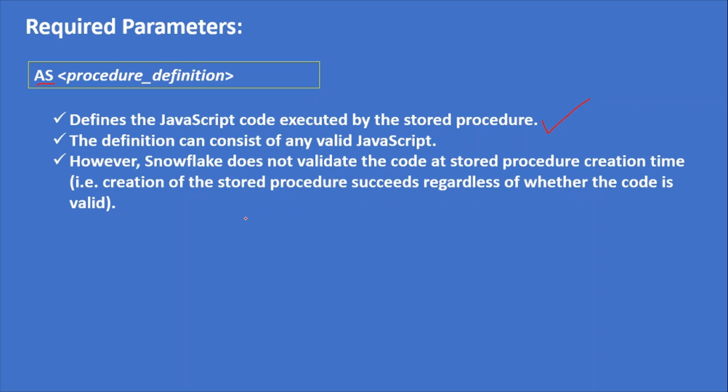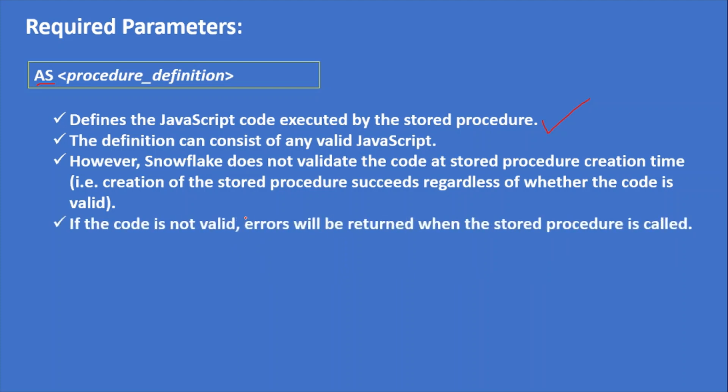You can specify any type of JavaScript code as the procedure definition. Even if there is a syntactic error, it will be created successfully, but it will throw an exception the moment you call the procedure — during the time of execution only it will throw the exception. If the code is not valid, errors will be raised when the stored procedure is called.